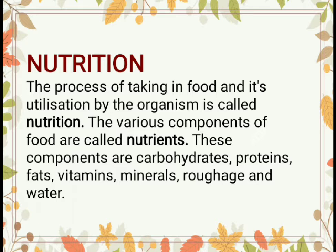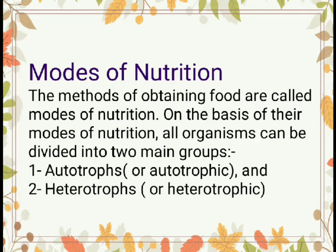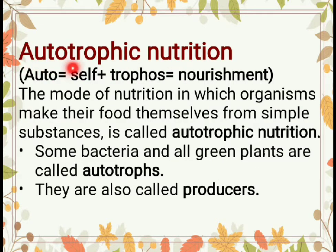Now we will see the mode of nutrition. The methods of obtaining food are called modes of nutrition. On the basis of their modes of nutrition, all organisms can be divided into two main groups: autotrophic nutrition and heterotrophic nutrition.